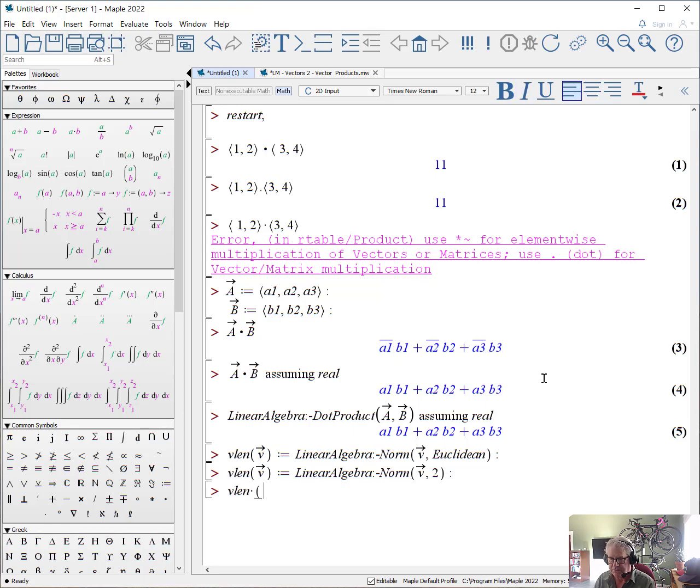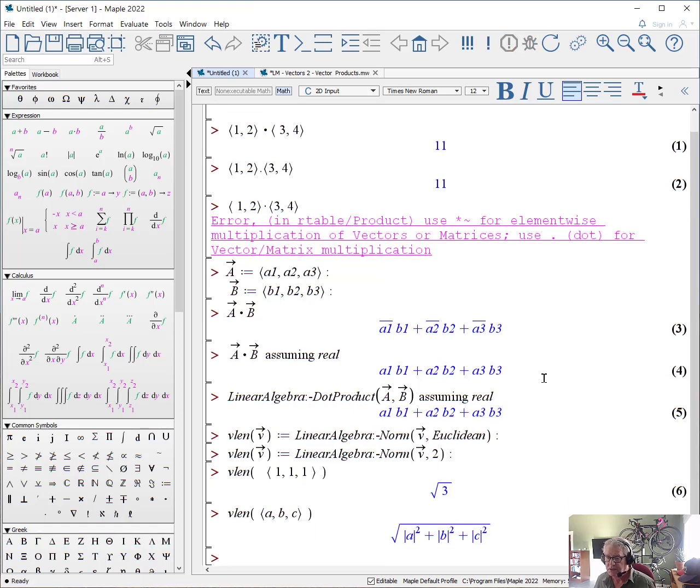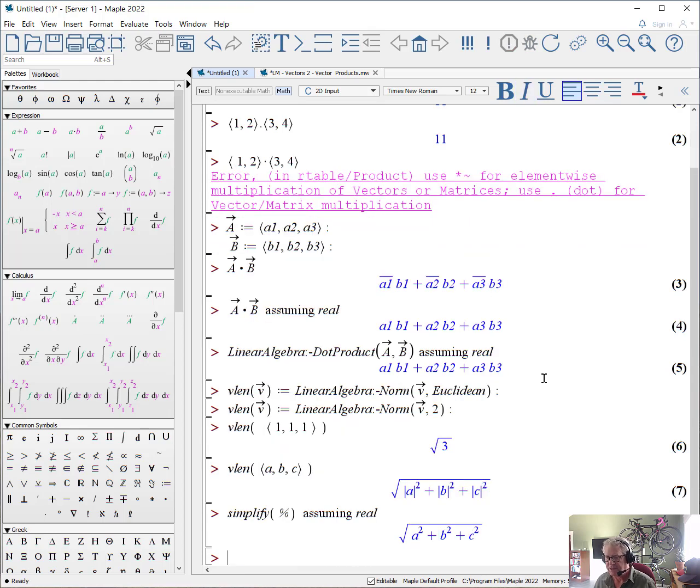So if I ask for what is the vlength of a vector 1, 1, 1, it will come back with the square root of 3. And in fact if I ask for what is the vector of a, b, c, again not knowing anything about the properties of the scalars, assuming they could be complex, the response comes back as the sum of the magnitudes squared. But of course as always what you can do is you can simplify the previous line assuming real and it will take away all the absolute value signs.